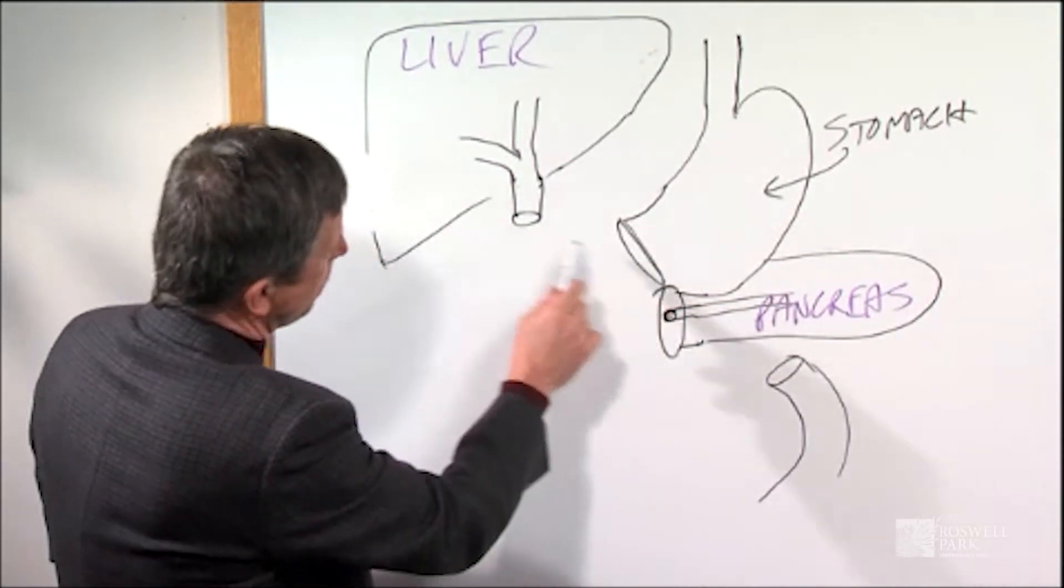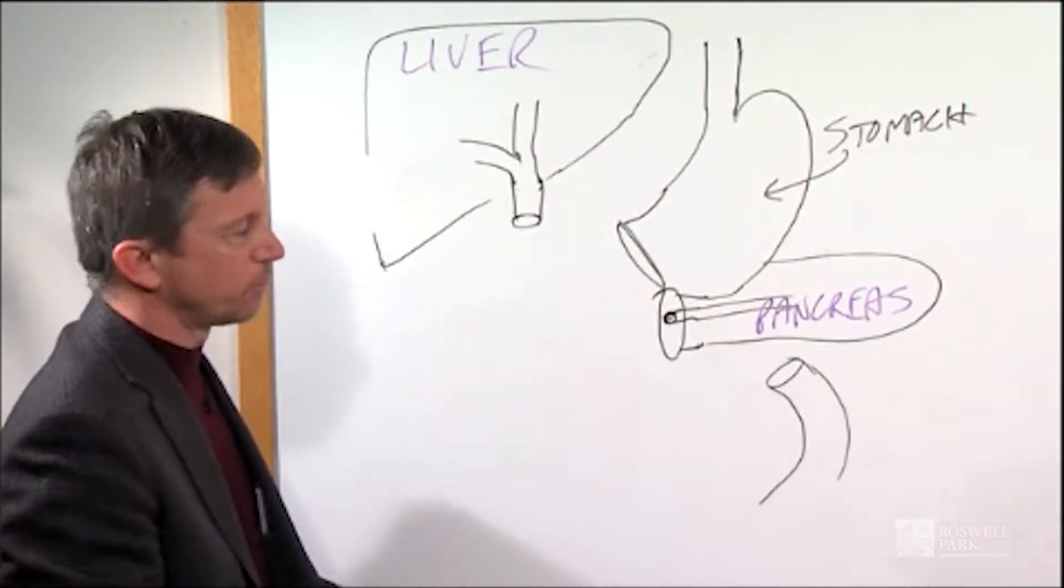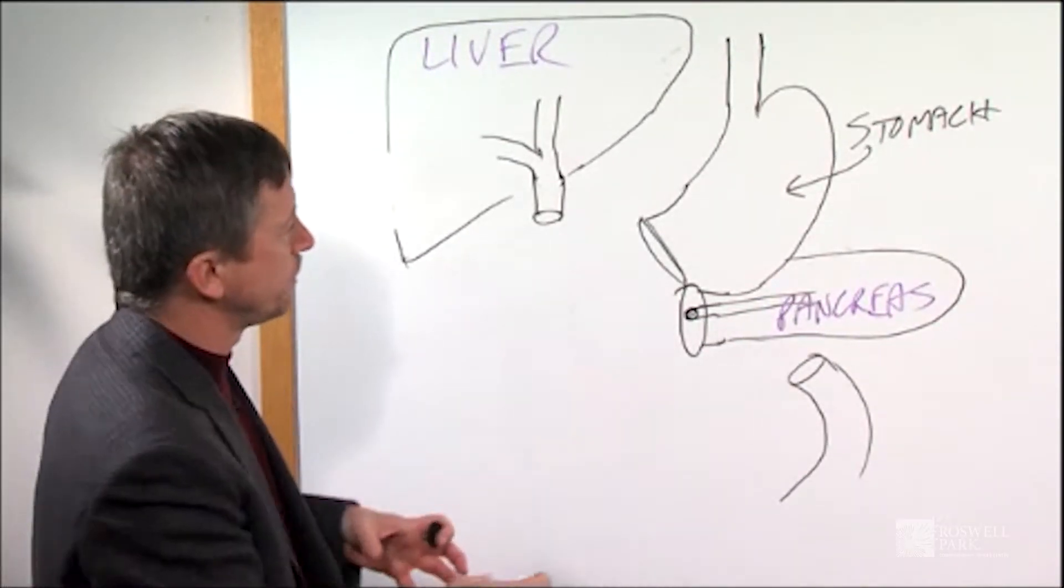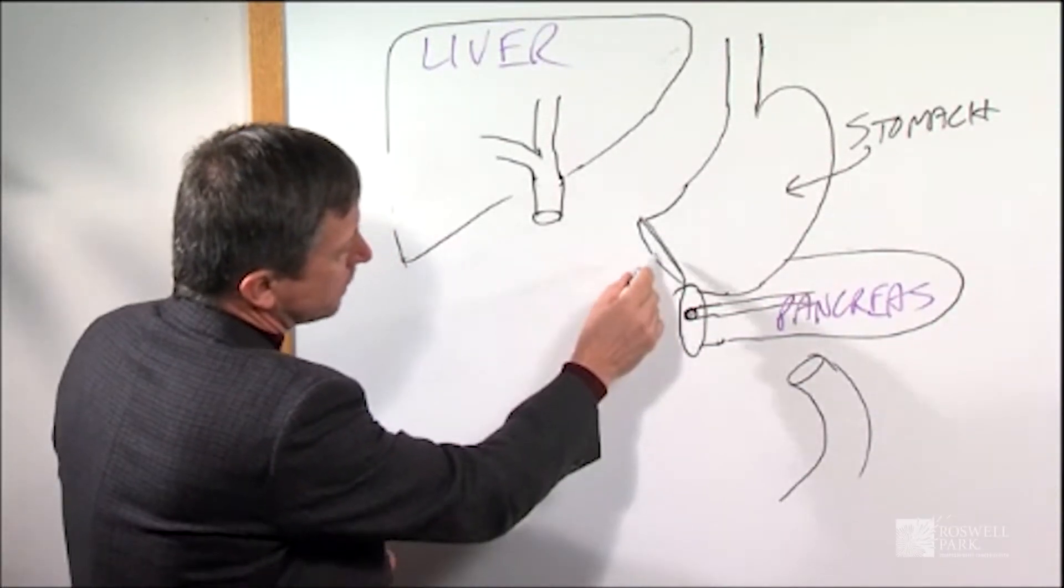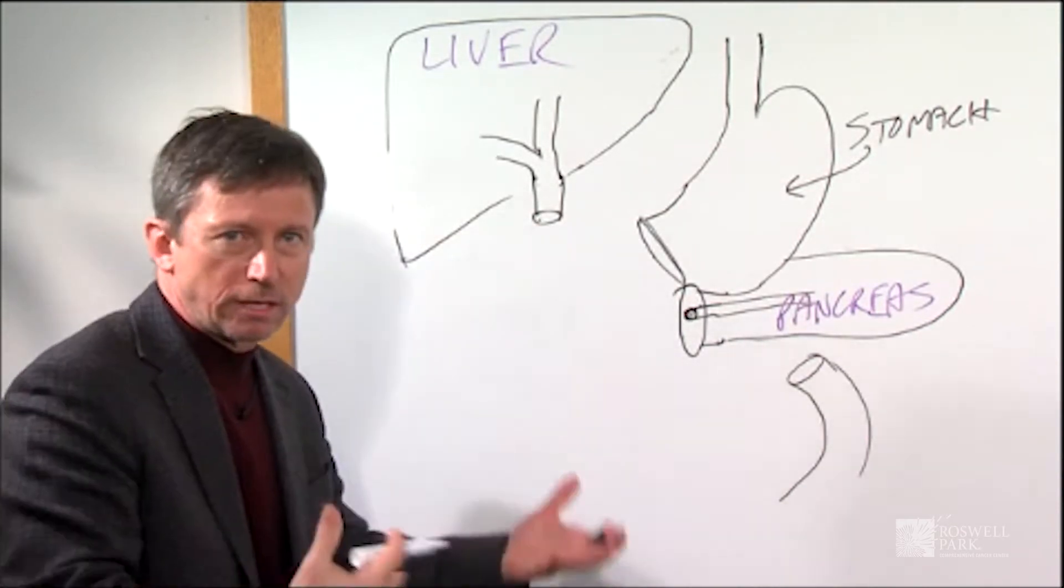The stomach is here and the bile duct is here, so you'll see here for the second part of the operation that involves hooking back up basic plumbing, so to speak, to hook the pancreas, the stomach, and the bile duct back to the intestines so that you can eat normally.